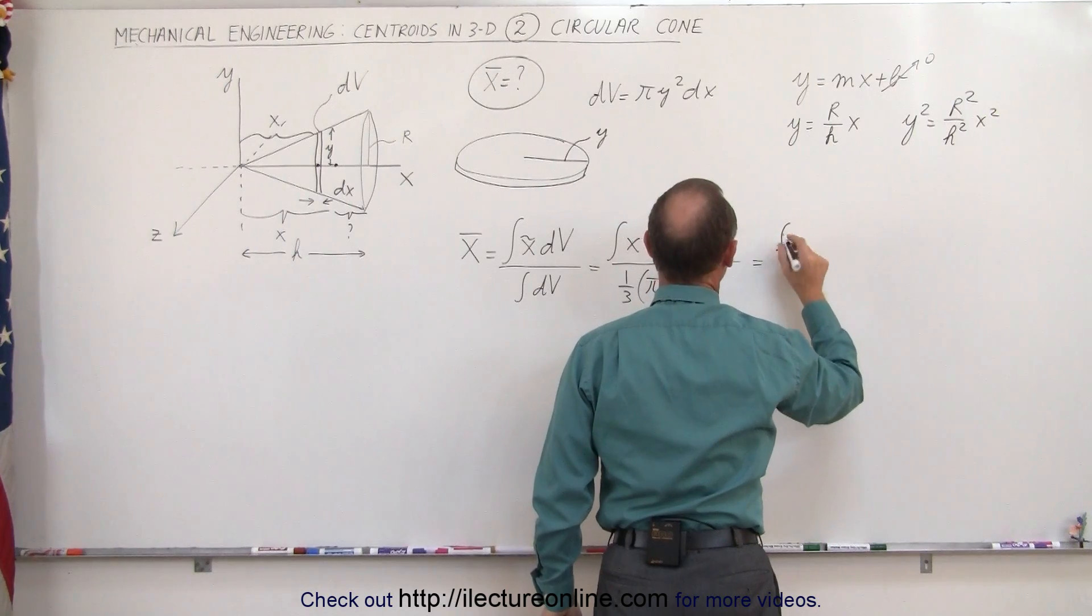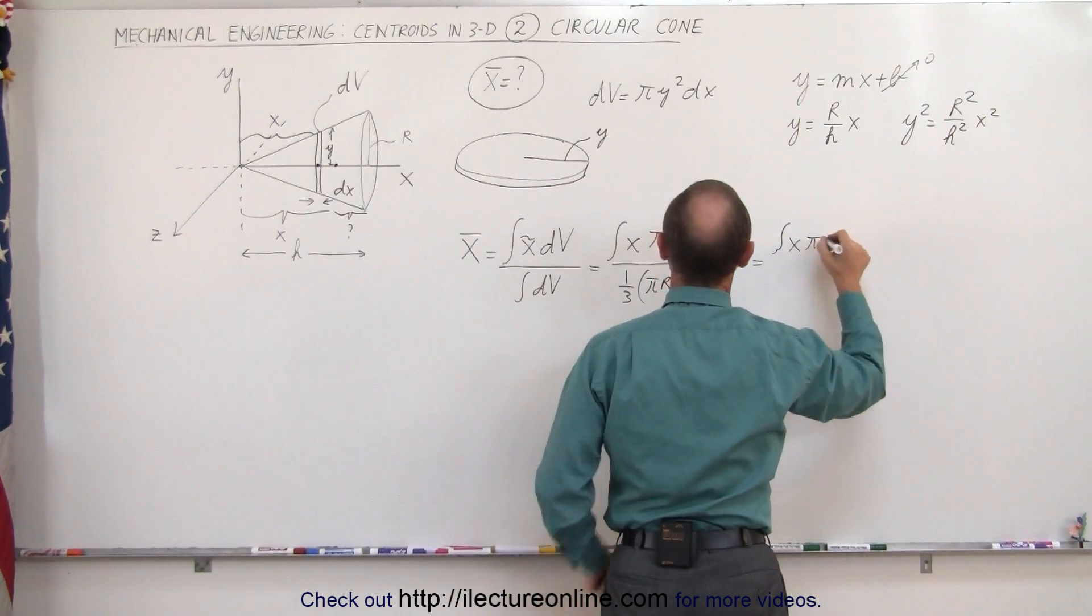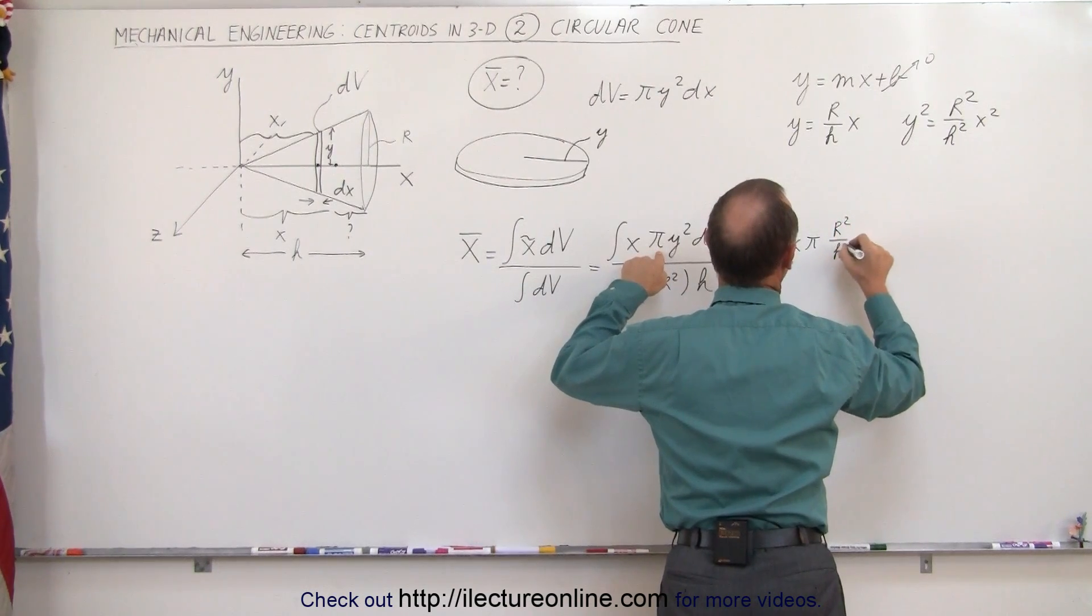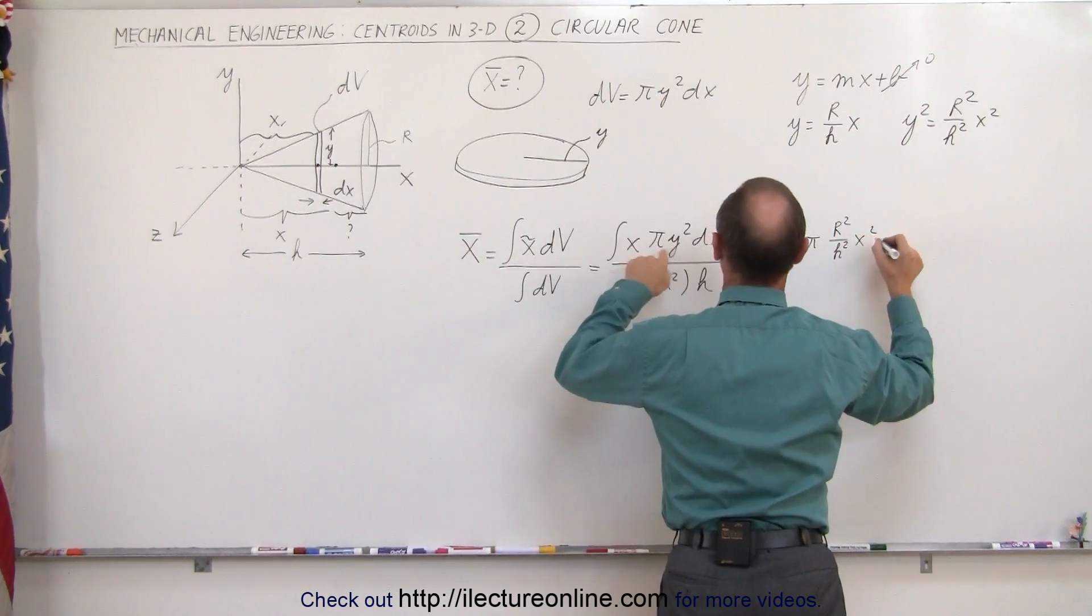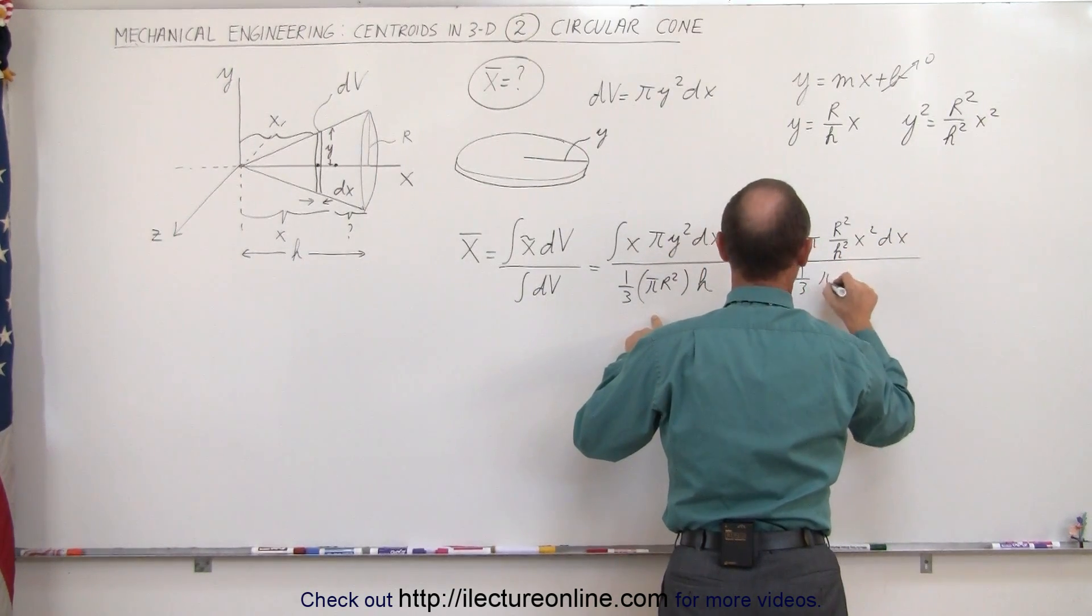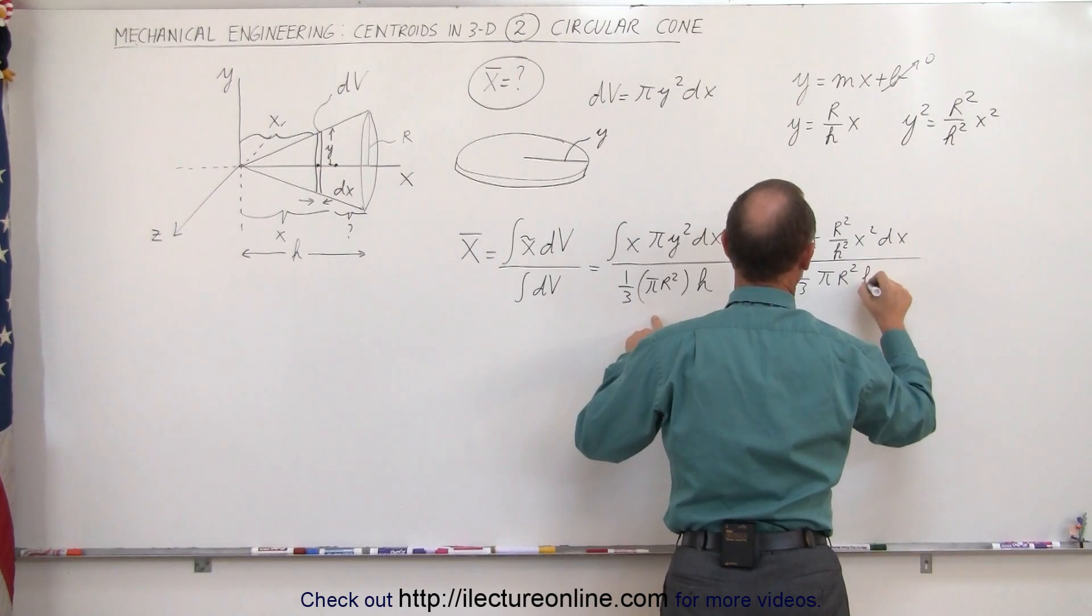This then becomes the integral of x times π instead of y², we write r² over h² times x² times dx all divided by one-third πr²h.